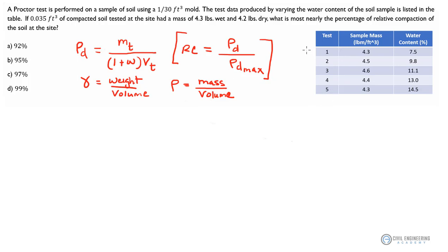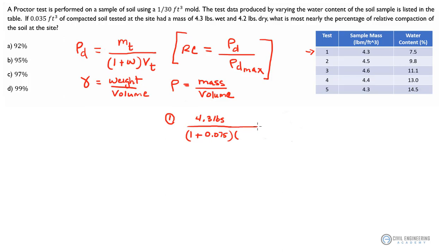Let's look at test number one. If I take the dry density formula and run it through for each one of these tests — we've got our total mass, the sample mass for test number one at 4.3 pounds, and if we divide that by 1 plus the water content, which we had at 0.075, times the volume given as 1/30th of a cubic foot, I calculate that for test number one we should come out with 120 pounds per cubic foot.